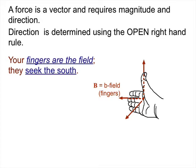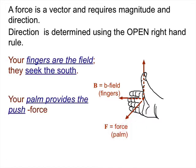So they're each going to represent a variable. The fingers are the field, that is the magnetic field. So the fingers are the field, and they seek the south. The palm provides the push, in other words it's the force. So the fingers are the field seeking into the screen, the palm is pushing left, and my thumb is the current, or the flow of positive charge.